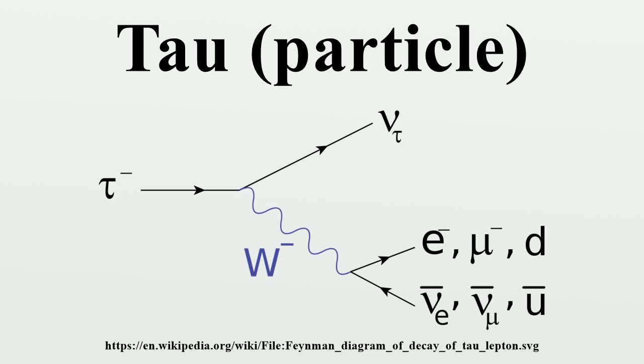The tau, also called the tau lepton, tau particle, or tauon, is an elementary particle similar to the electron, with negative electric charge and a spin of one-half.